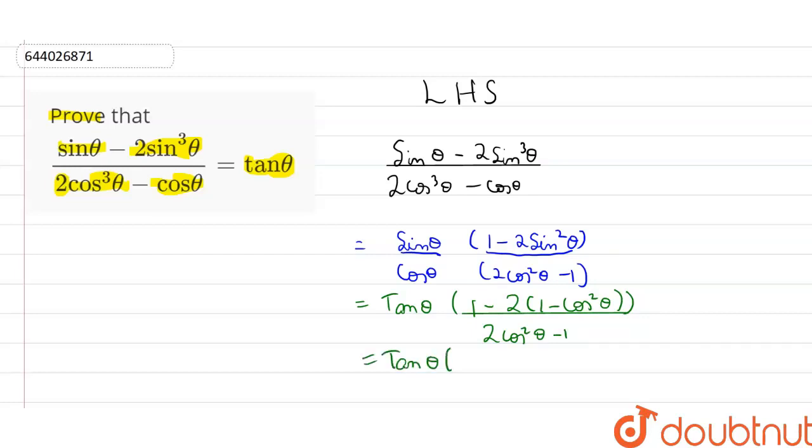tan theta into 2 cos squared theta divided by 2 cos squared theta minus 1. Now, we can see that the numerator will become tan theta into 2 cos squared theta minus 1 divided by 2 cos squared theta minus 1.